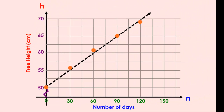The benefit of our graph looking like this is that it's easier for us to interpolate other results. Interpolation is when we find a point on a graph that we aren't necessarily given in our table, but we use our line of best fit to predict what it could be. For instance, what if we were asked how many days it would take the tree to reach a height of 62.5 cm? That value is right here on the h-axis scale. We line it up with our line of best fit and reach approximately 75 days.